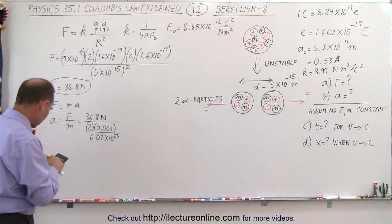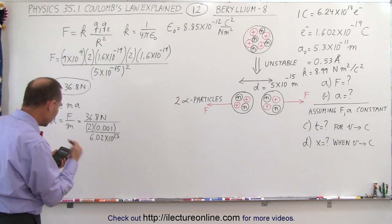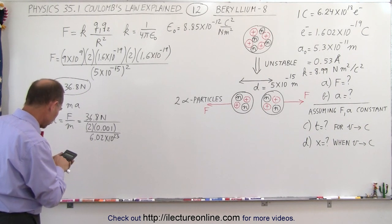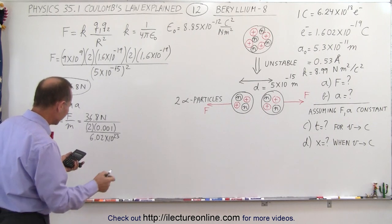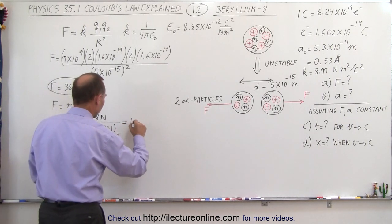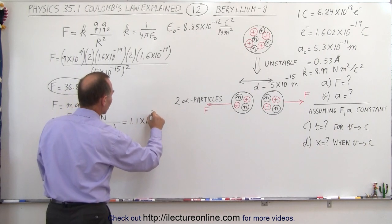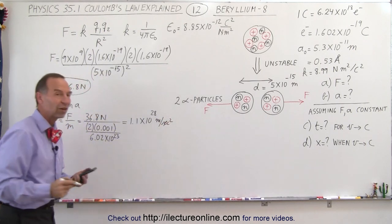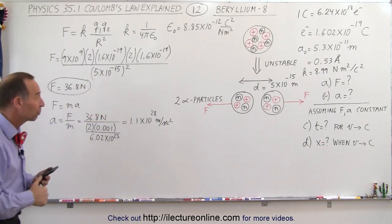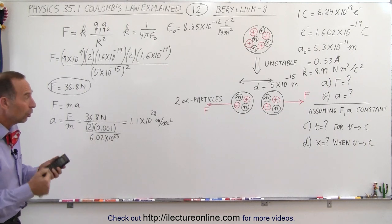So 36.8 divided by 2 divided by 0.001, then multiplied by 6.02 times 10 to the 23rd, gives us an acceleration of approximately 1.1 times 10 to the 28 meters per second squared. Imagine the acceleration those alpha particles experience.